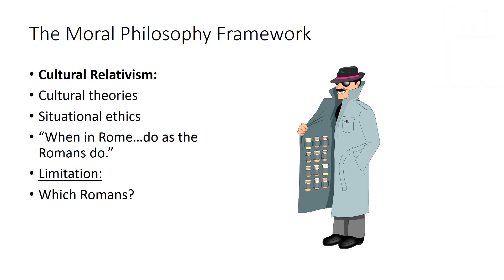The concept of cultural relativism states that culture varies from country to country, and therefore, since ethics is part of culture, it is also relative. In other words, when in Rome, do as the Romans do. For example, charging interest in certain Arabian countries is considered unethical because they use Sharia law, whereas it is quite normal in other countries.